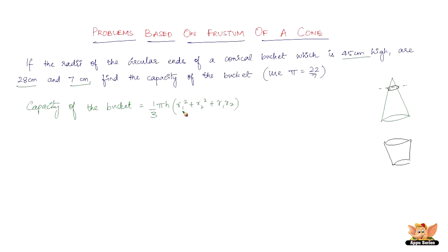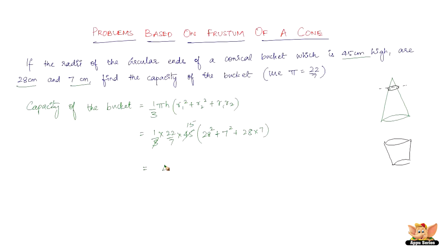It's a straightforward, simple problem. So: (1/3) × (22/7) × 45 × (28² + 7² + 28×7). Now 3 goes 15 times into 45. Solving the rest, we get 48,510 cm³. You just have to square the radii, multiply r1 by r2, then add — it's a basic arithmetic operation.